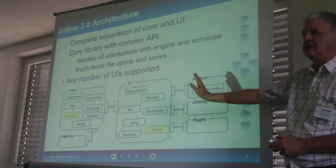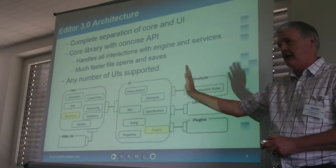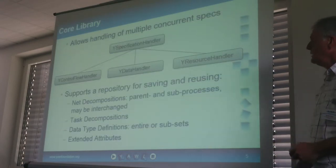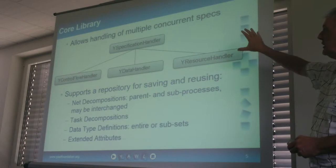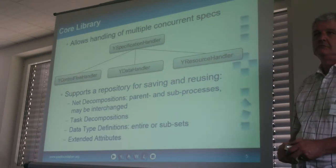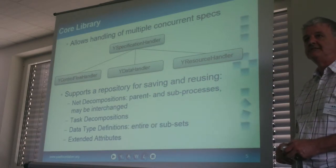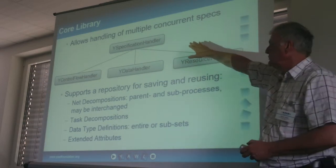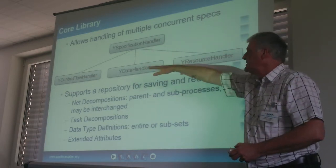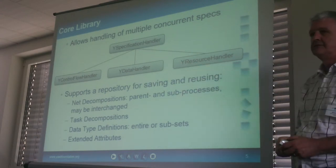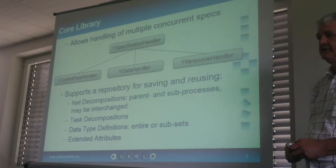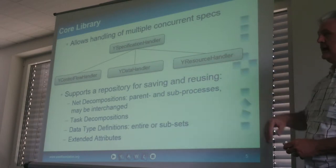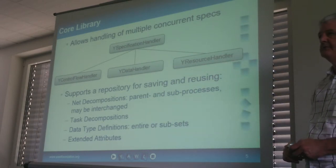The core jar file allows you to handle multiple specifications concurrently. You get an object through the API which splits into access to objects, one for each of the major perspectives, and methods to handle those particular perspectives.